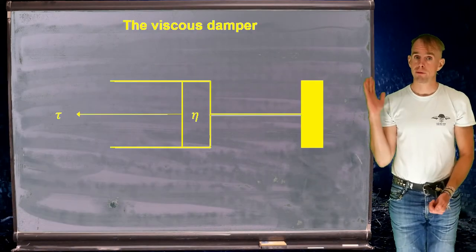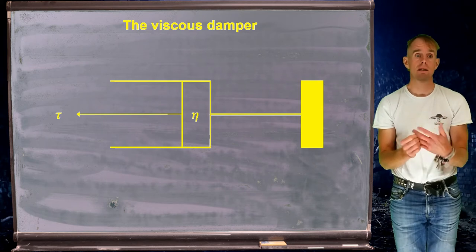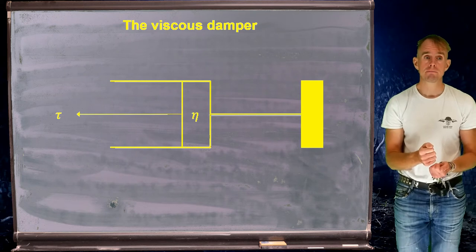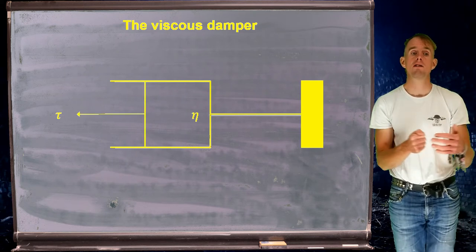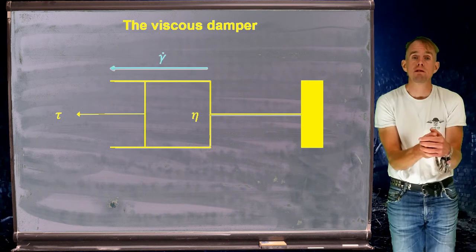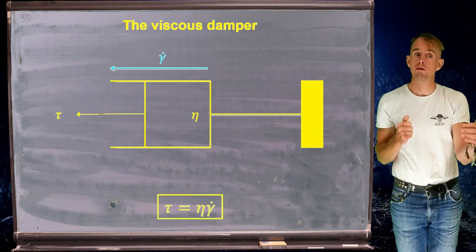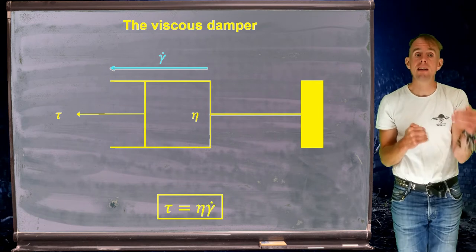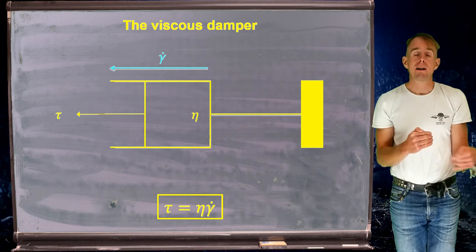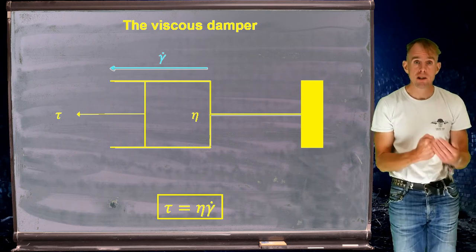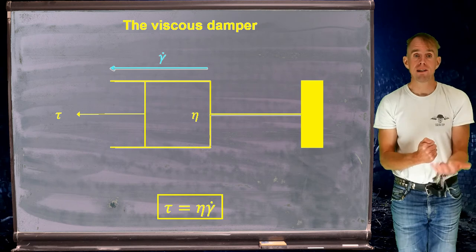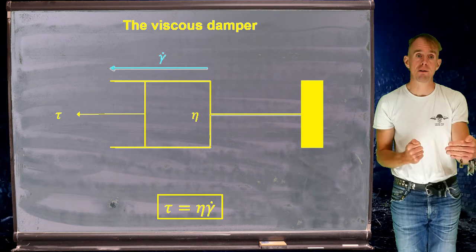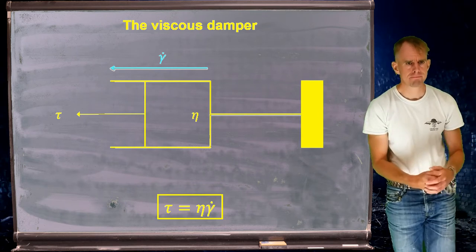Here on the board is a diagram of a viscous damper — a piston moving within a viscous liquid. We apply a stress tau and the result is a strain rate. When I remove that stress, the strain or extension remains exactly the same. An ideal viscous damper obeys the Newtonian constitutive law: the stress tau is equal to fluid resistance eta times strain rate gamma dot.